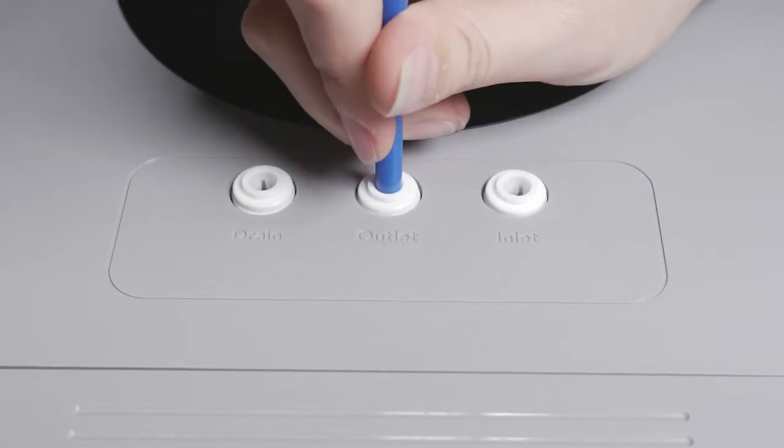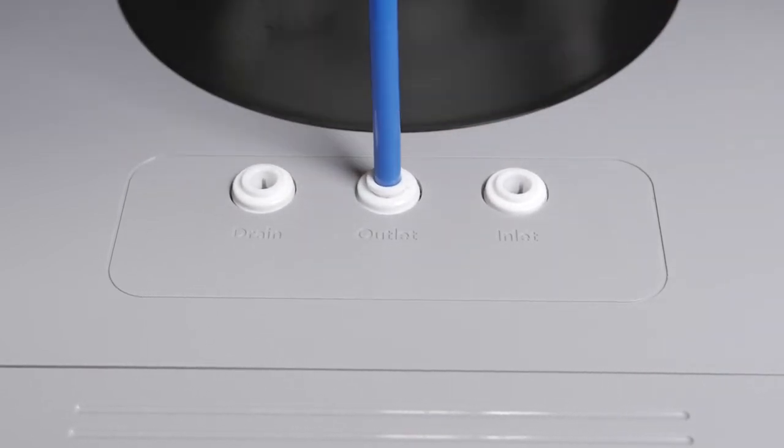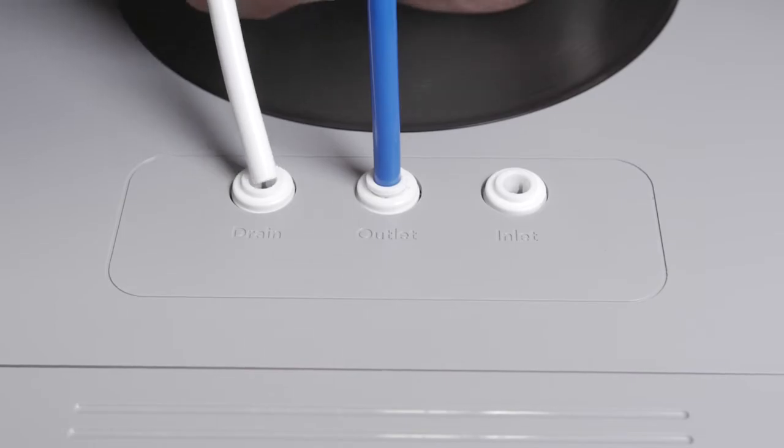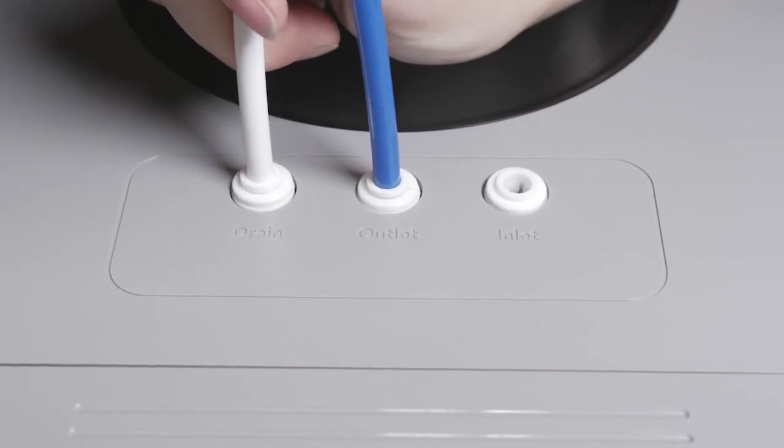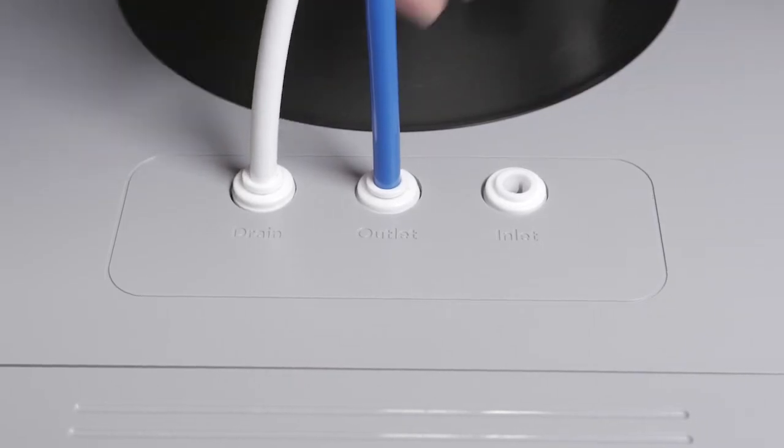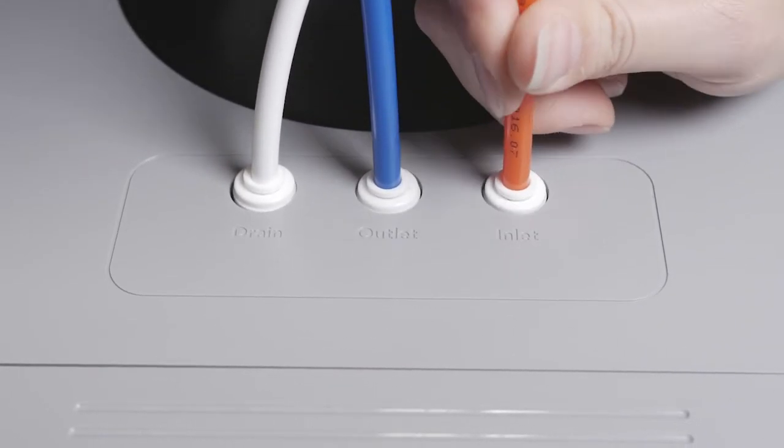Connect the open end of the white tubing from the drain clamp to the hole labeled drain. Lastly, connect the open end of the orange tubing into the hole labeled inlet.